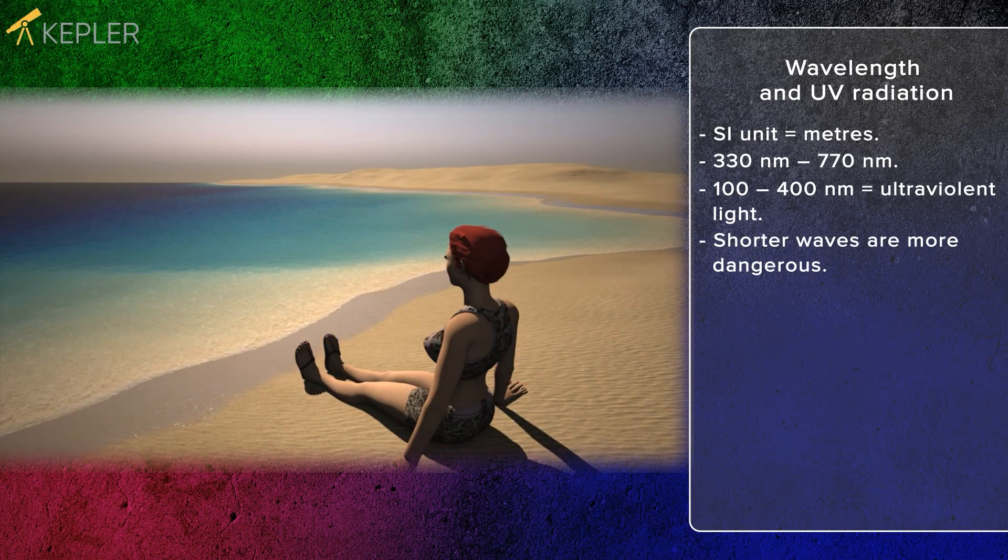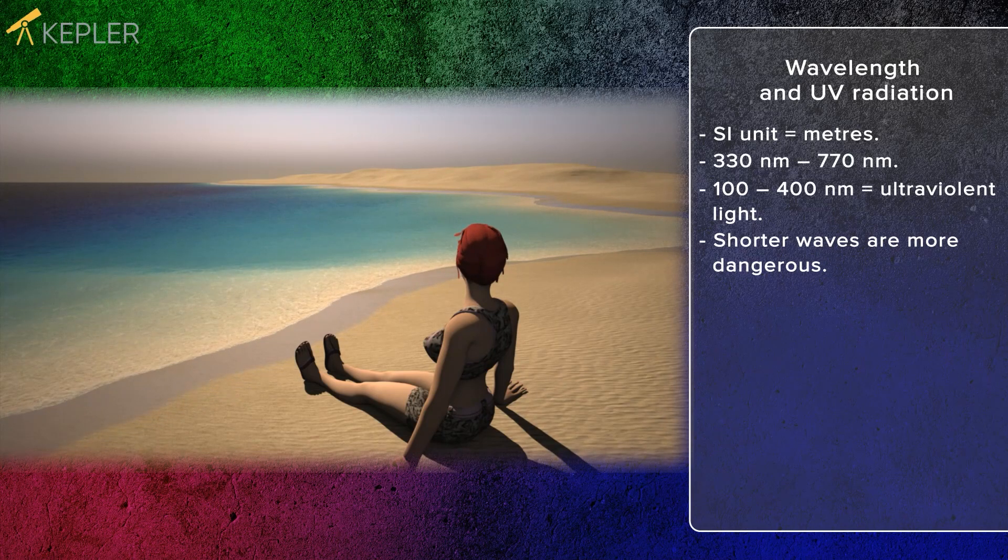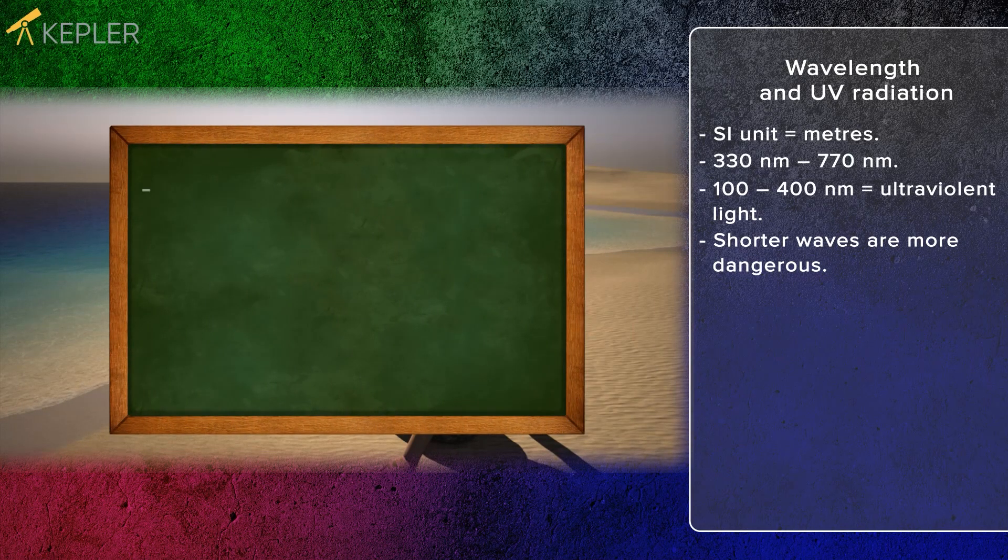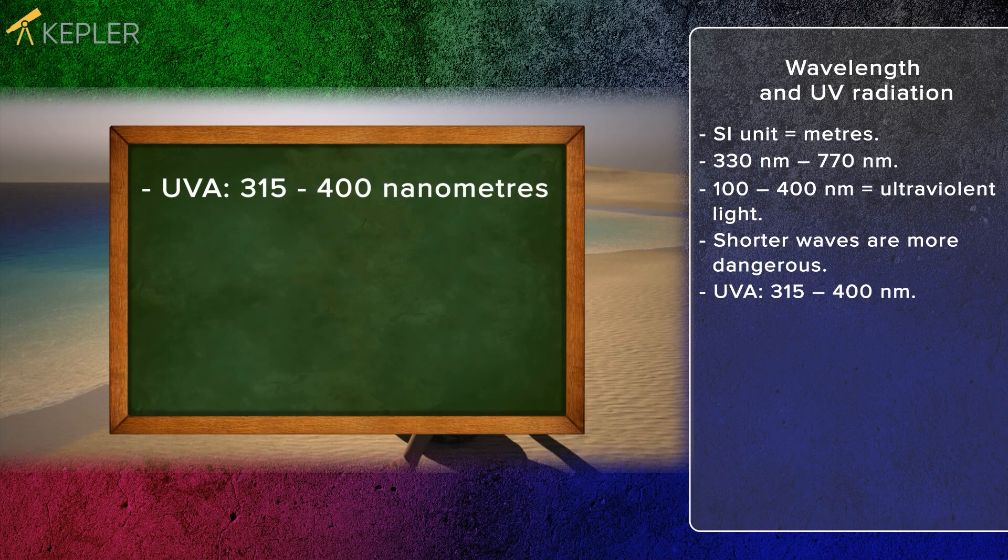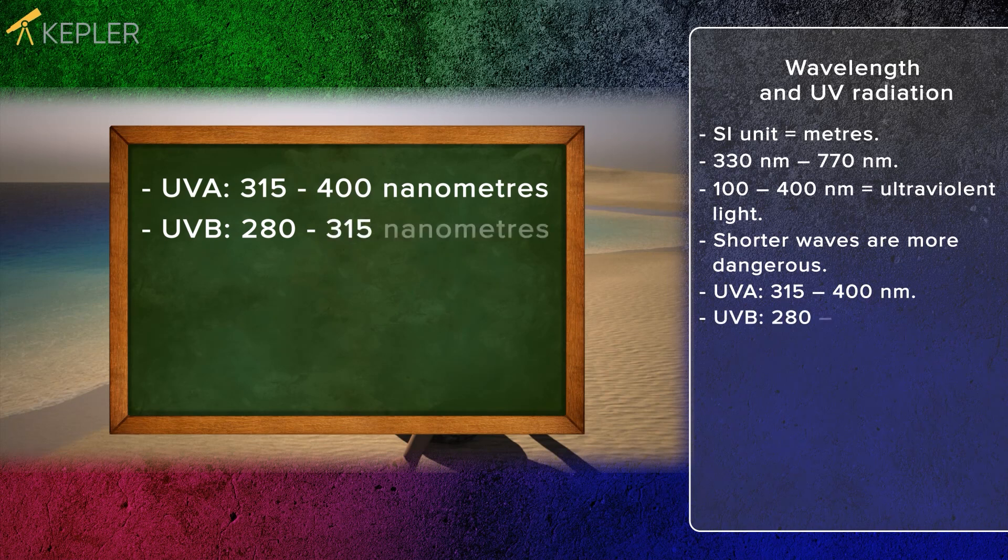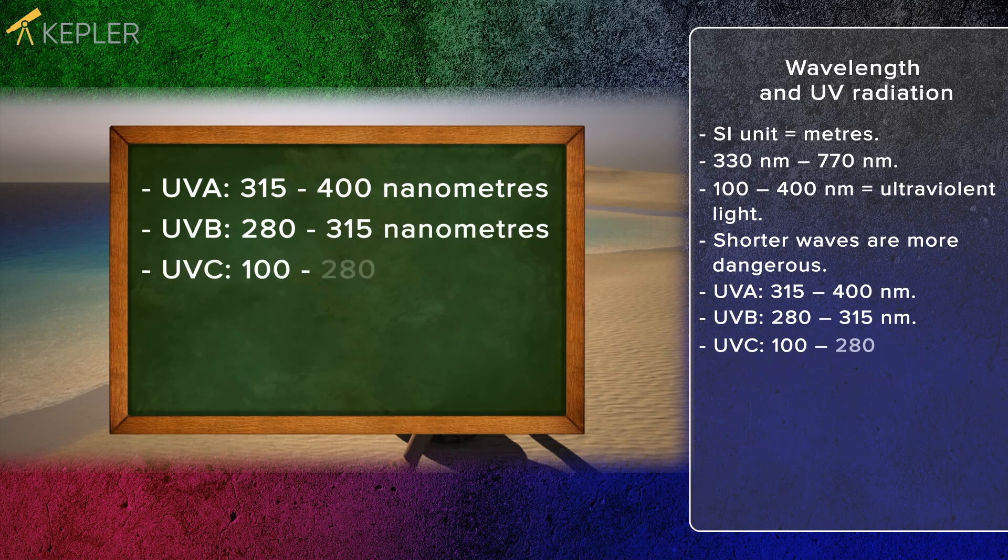Therefore, ultraviolet light has been divided into three different categories: UVA, 315 to 400 nanometers; UVB, 280 to 315 nanometers; and UVC, 100 to 280 nanometers.